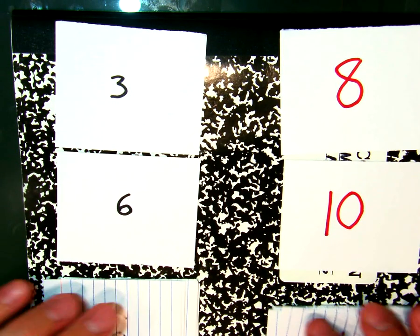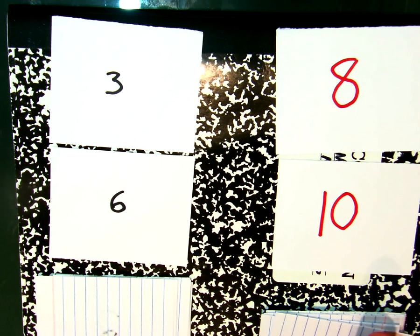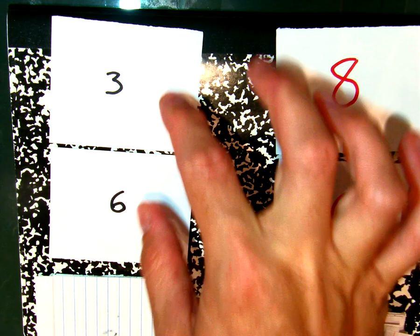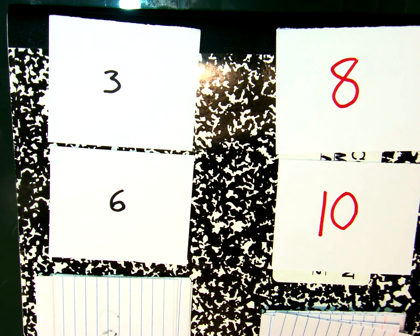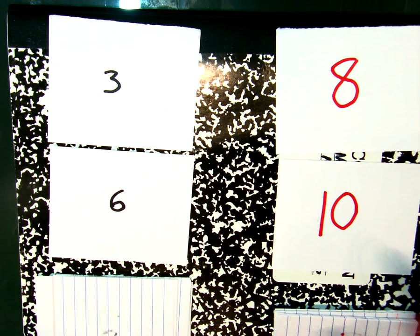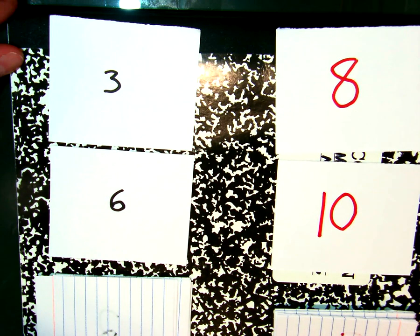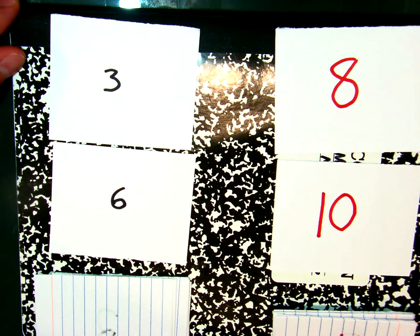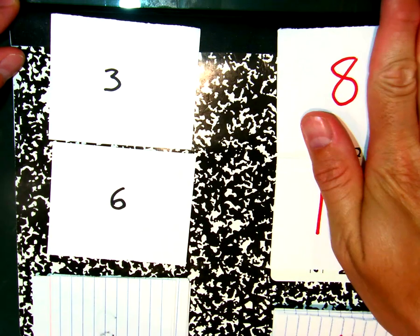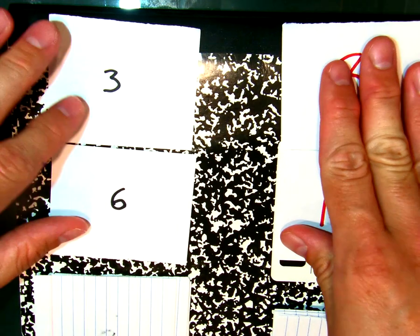So now I have two fractions. I have 3 sixths and 8 tenths. And we want to decide whose is bigger. Which fraction is greater? And you can look back at yesterday's video if you want to determine less than or greater than. I'm going to use the shortcut. 3 times 10 is 30. 6 times 8 is 42. So that means this side is greater. So the fraction that's bigger wins and takes the cards.